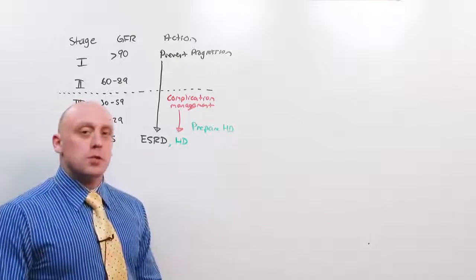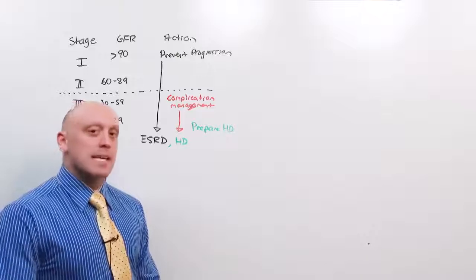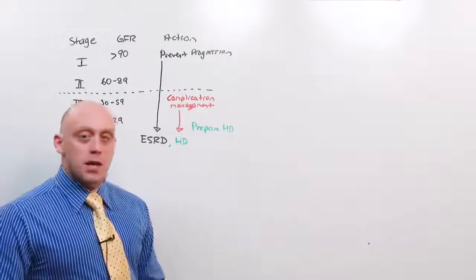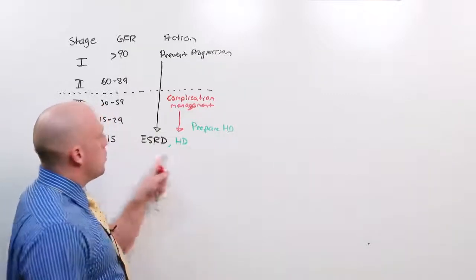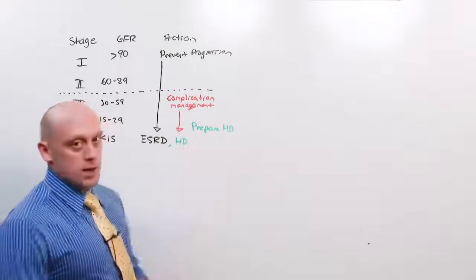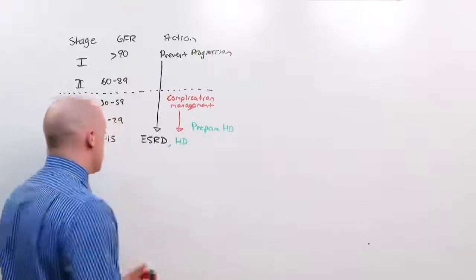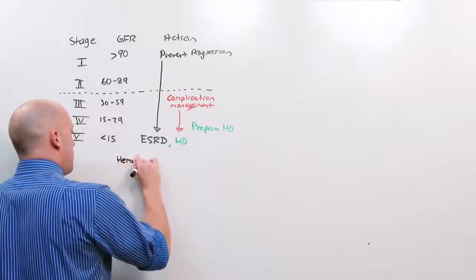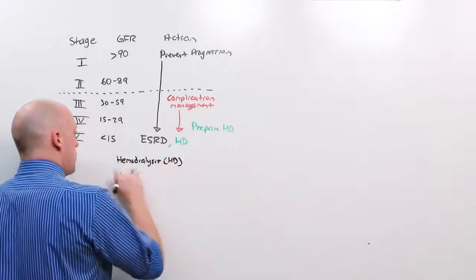That gets put in today and matures over the period of months. You can't use an AV fistula right away. So if you know they're going to progress to CKD 5, you might as well put in the fistula CKD 4, getting them ready for dialysis. There are two different types of dialysis. There's hemodialysis and peritoneal.